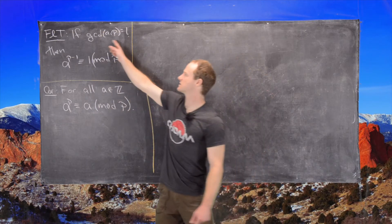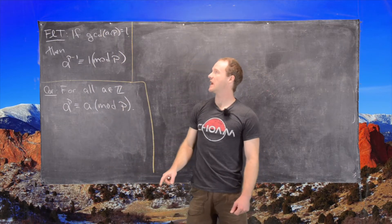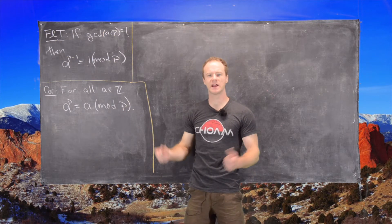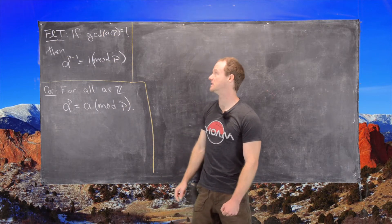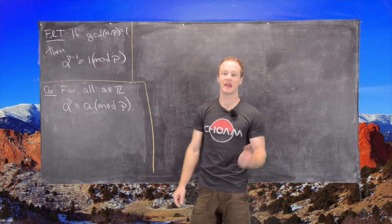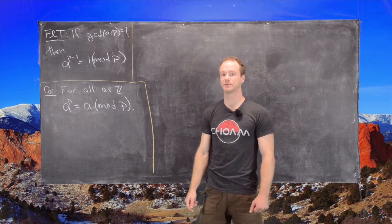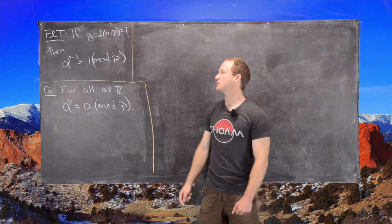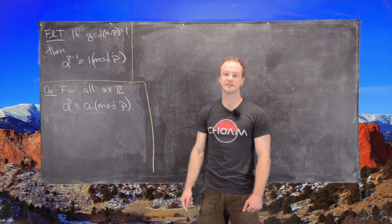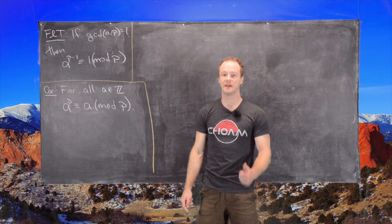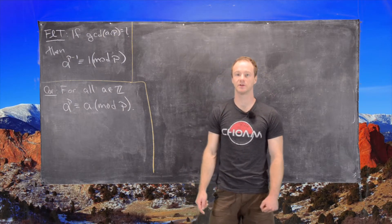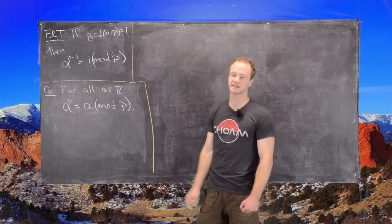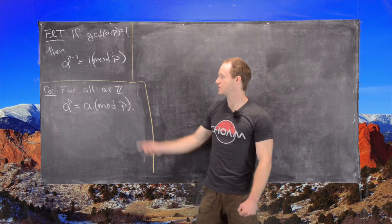So now let's really dig into this. If the GCD of A and P is 1, what kind of numbers don't have the GCD with a prime being 1? And the answer to that is only multiples of the prime. So in fact, if the GCD of A and P is not 1, then A itself has to be a multiple of the prime, which really leads us to this corollary.